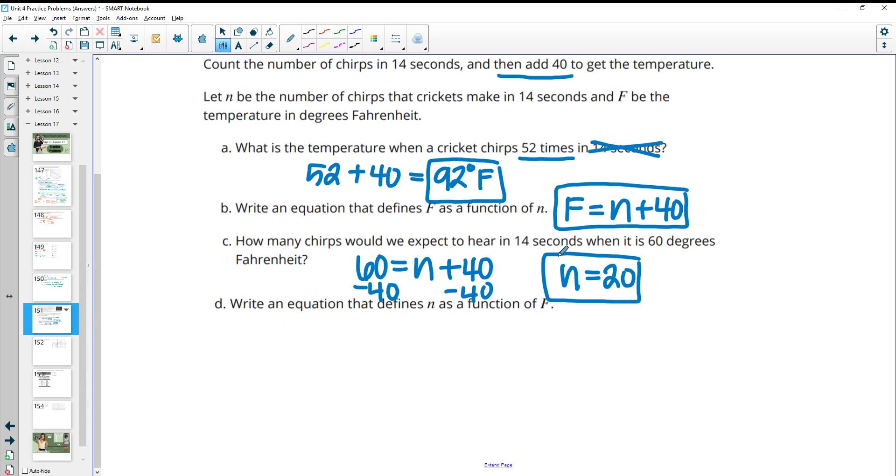Then we want to take and write the equation to be solved for n as a function of the temperature. So we had this original equation and now we want to solve it for the number of chirps. So we just subtract 40 from both sides. So we would take the temperature minus 40 and that would give us the number of chirps.